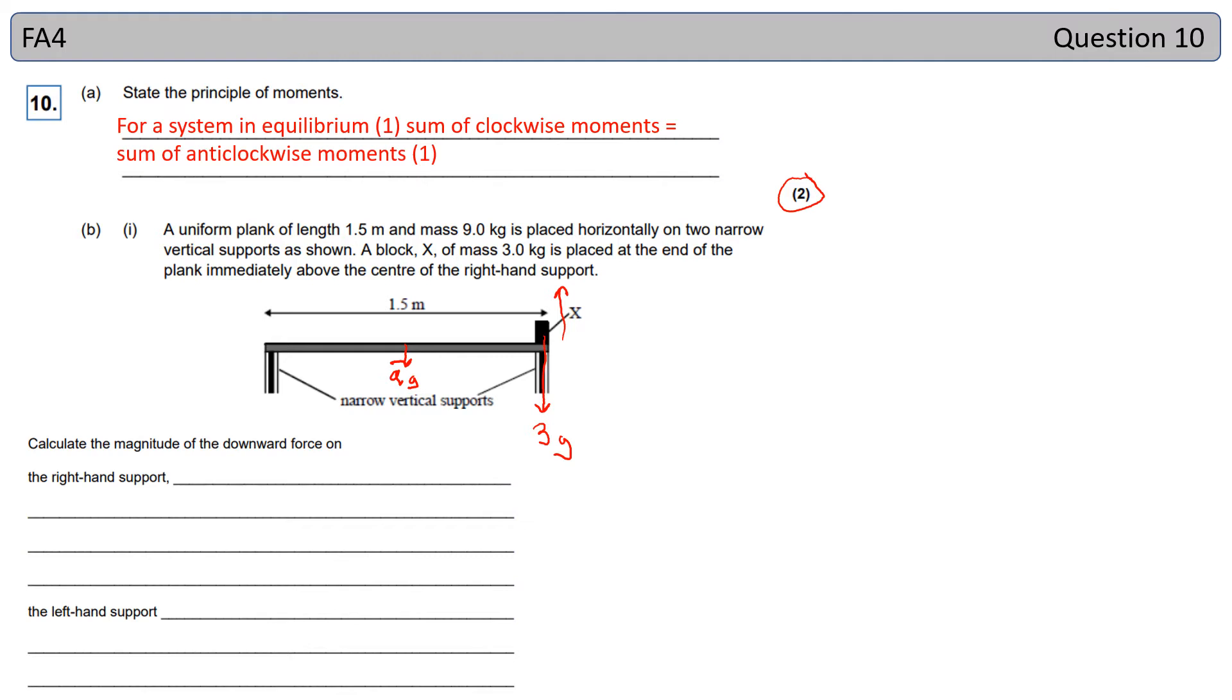So we know that we have an upward force there of three G, a support force from there. And then both of these beams are going to experience an additional upward force, splitting the weight of the beam. So that will be a half times nine times G on both sides.